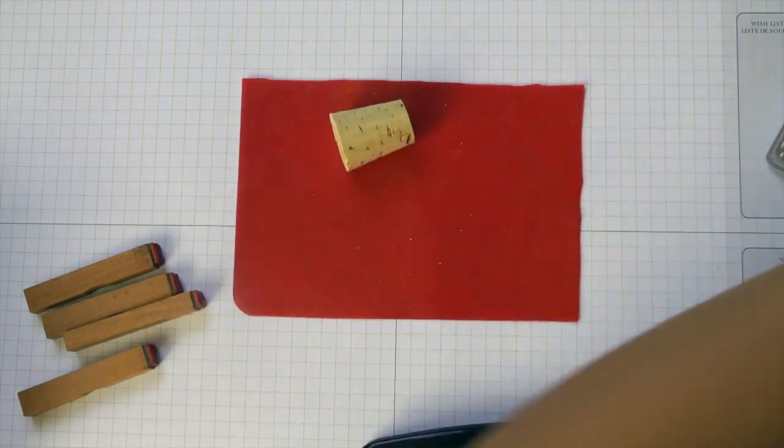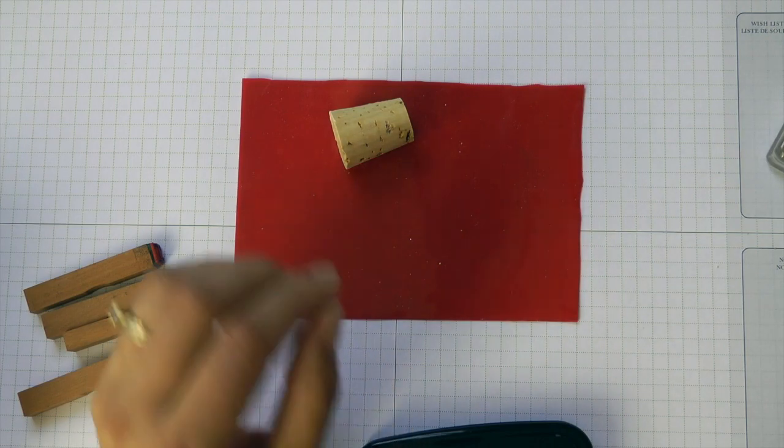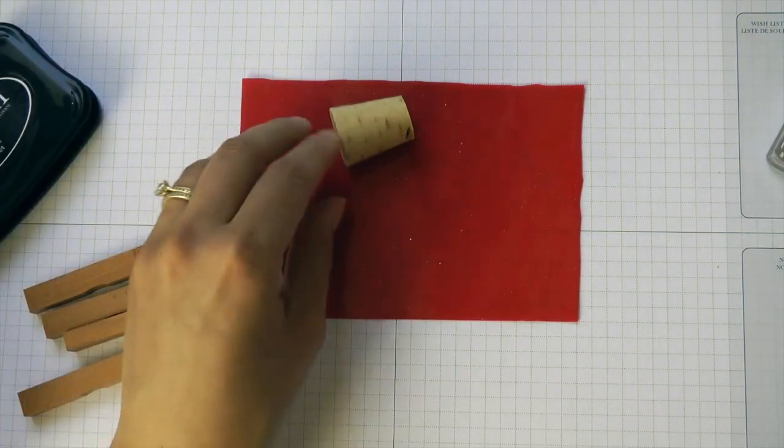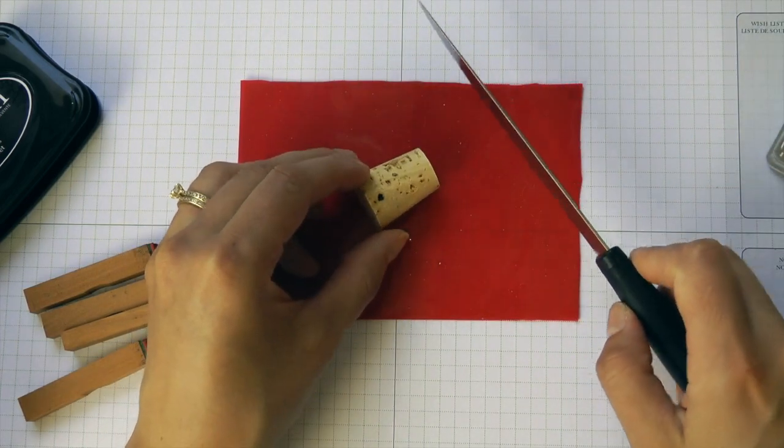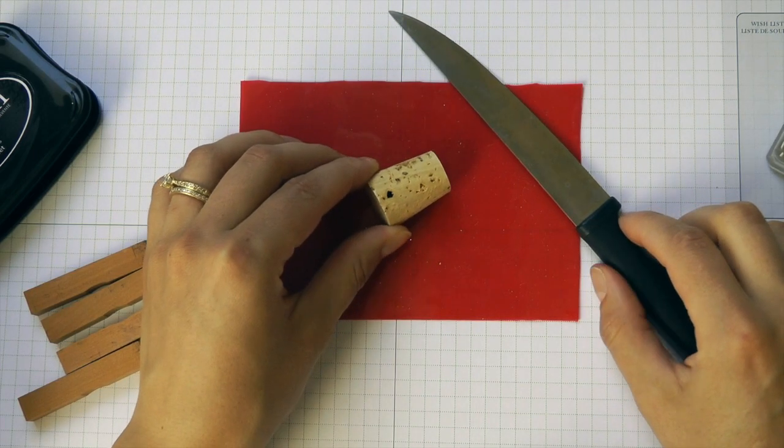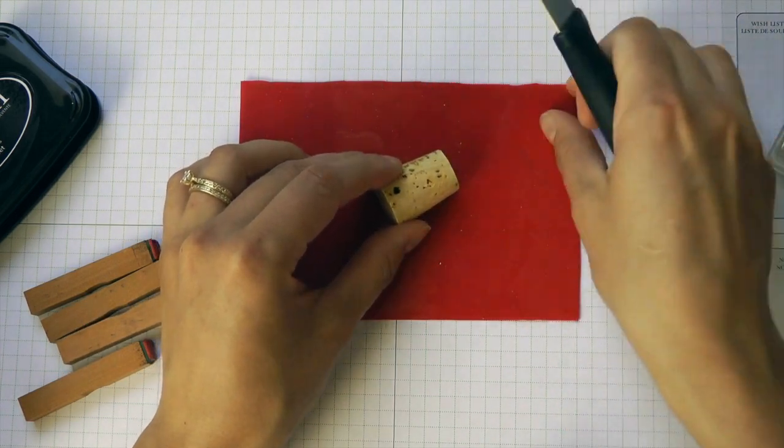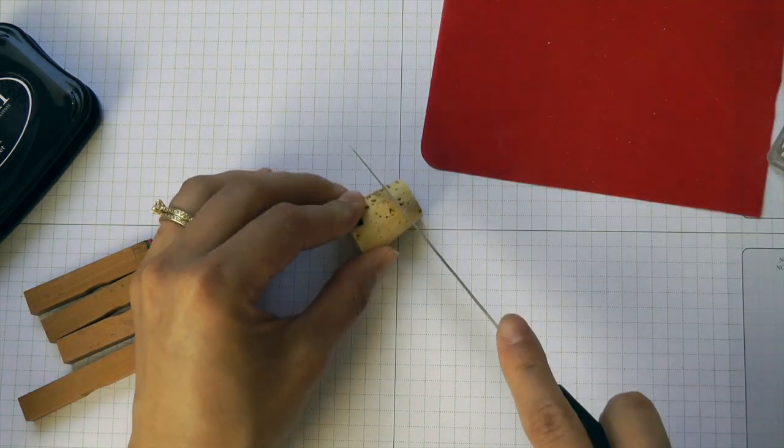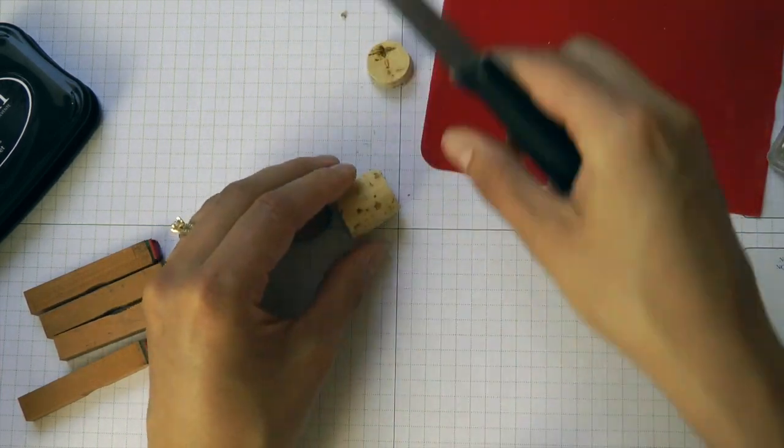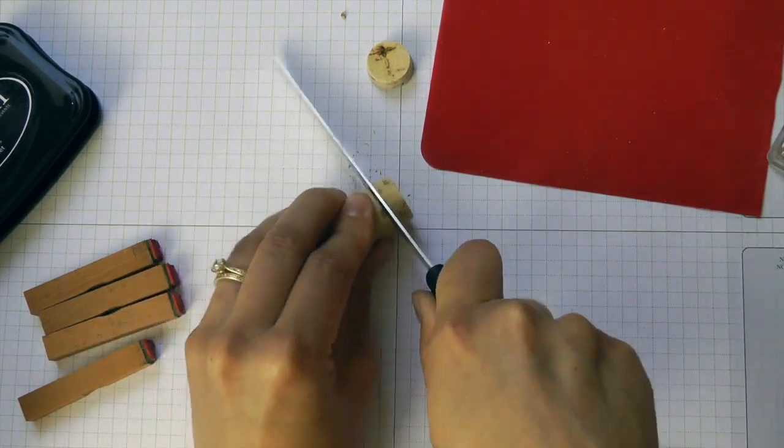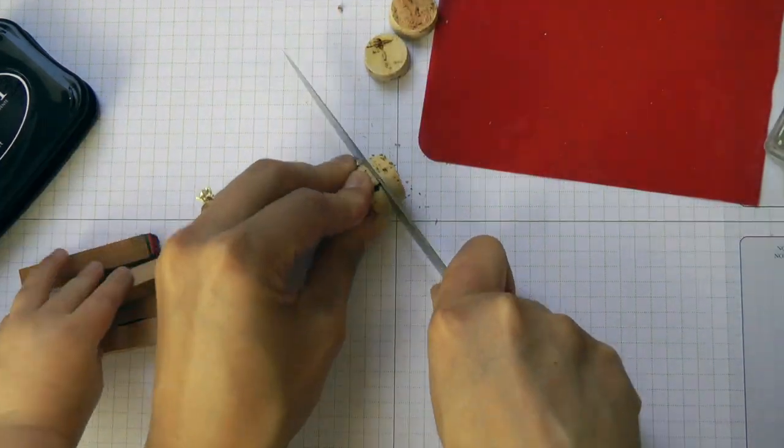So first things first. This is not a project that you want to do if you're not good with a knife or if you're a child. Don't do this at home because you do need a kitchen knife. What we're going to do is cut this cork into four equal size pieces. It's fine that it's larger here and smaller here, we're just going to go for it. Off of my silicone mat, and here we are starting to cut. I sped it up so you didn't have to watch me struggle with this. Be careful for those fingers.